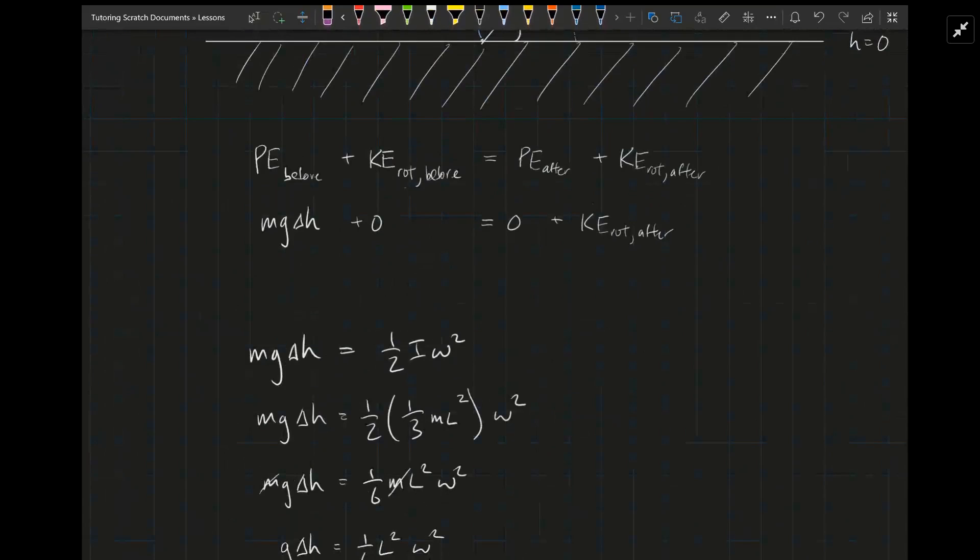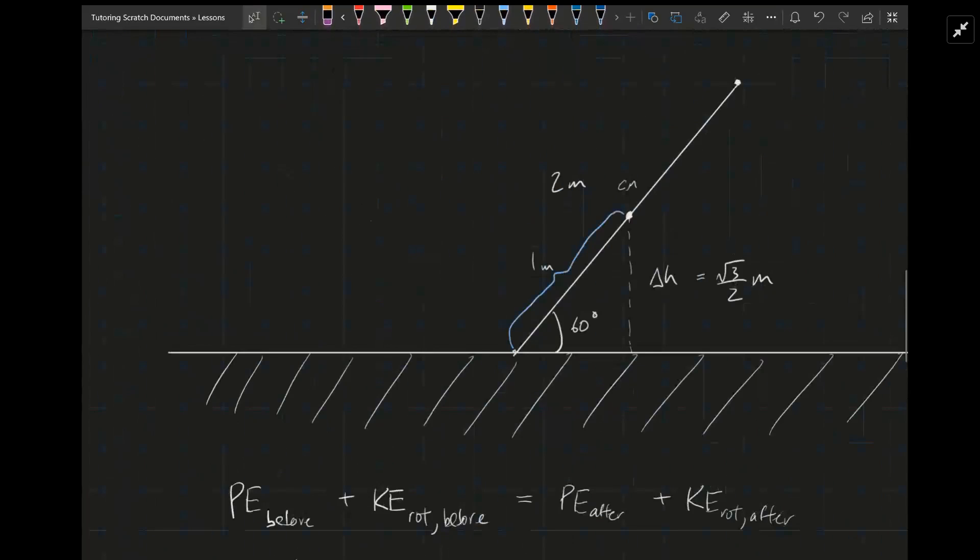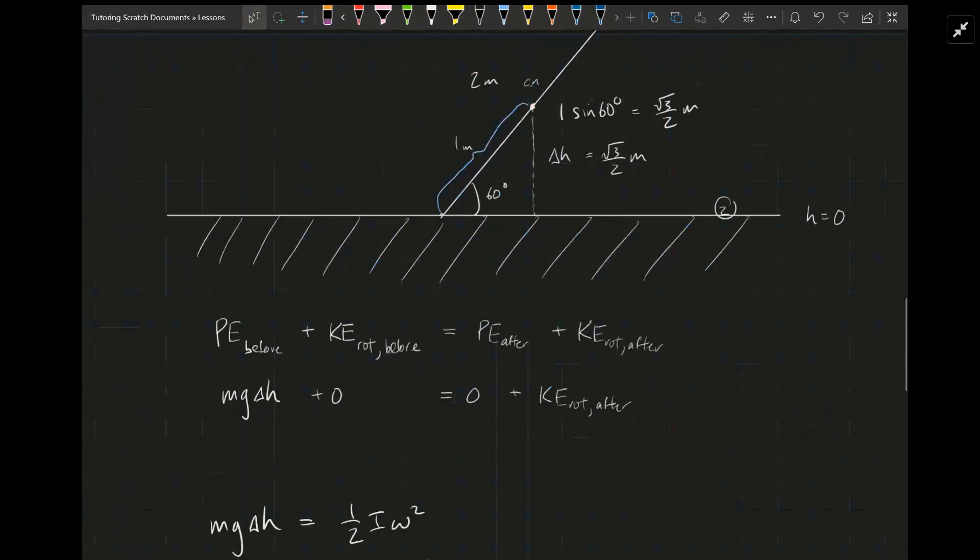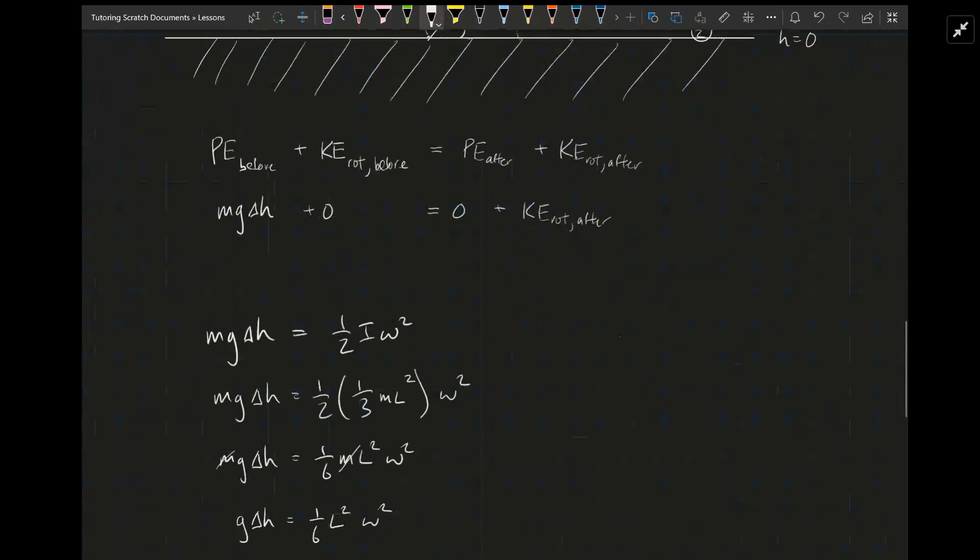Let's start with delta h. What's the change in height of the center of mass of the rod between the first position and when it's at the horizontal? Well, it's this distance here, this white dotted line. Because the center of mass is at one meter along the rod, and it's at an angle of 60 degrees, this is 1 times sine of 60 degrees, which is root 3 over 2 meters. So that's delta h.